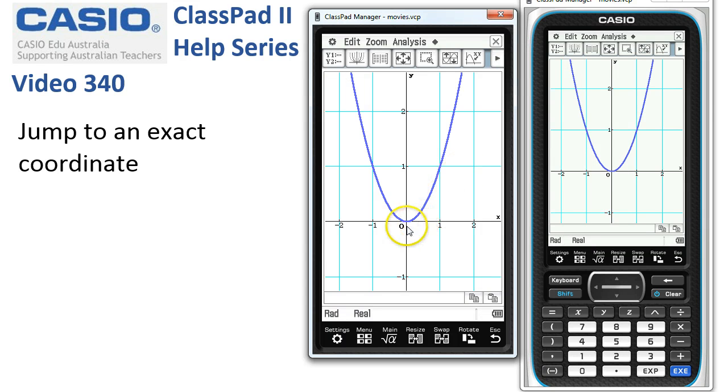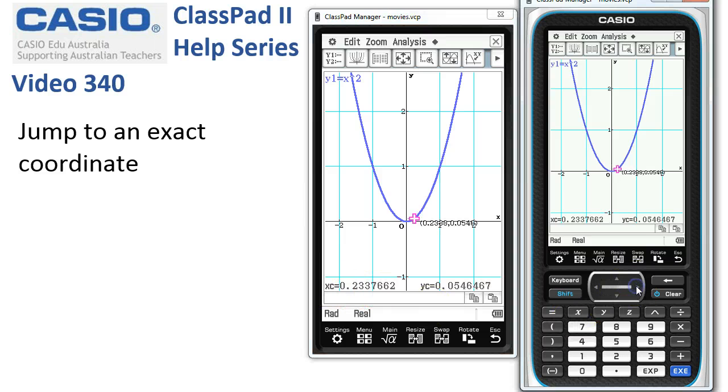Now, maybe we want to get to exactly 1.1. When we use the analysis trace tool like this, it starts off at 0.2. But as I tap right, you can see the increments here really aren't very pleasant. It's very hard to get to exactly the point 1.1, where x is 1.1, going by these increments.